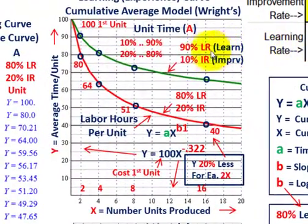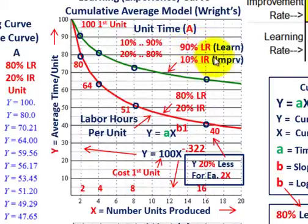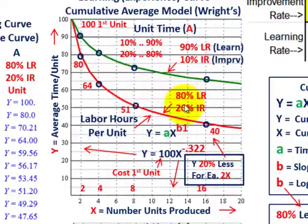I'm showing 80% in red versus 90% learning rate in green. When we're talking about a 90% learning rate, that sounds better than 80%, but in fact it isn't — because with a 90% learning rate you only have a 10% improvement rate. As you double your output, say from 2 to 4 units, you're only reducing your average time by 10%. With 80%, you get a 20% improvement rate, which is actually better.